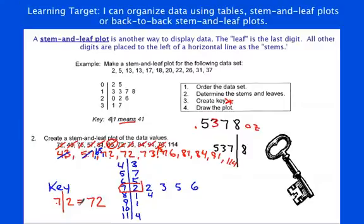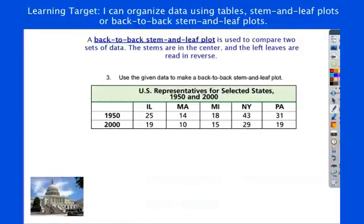Where the key really is going to be important is when we have a back-to-back stem-and-leaf plot. Back-to-back stem-and-leaf plot is when you have two different groups of the same data. Here we have U.S. representatives in 1950 and 2000. We're comparing the two different time frames. What I'm going to do, first of all, we're going to put this in order just like before, but I'm going to keep these states separate. I'm going to keep 1950 separate from 2000.